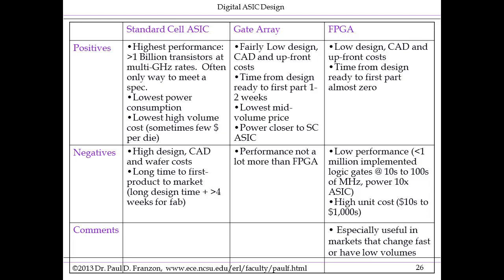The FPGA is almost the inverse opposite. Very low design costs — you can do this with small teams. The CAD tools are very cheap, often free, and you can go from having a design ready to your first part in zero time. However, performance is quite low: you tend to have only 100,000 or so logic gates operating at around 100 MHz, and power per unit function is at least 10 times that of an ASIC. These are also large, complex chips with a very high per-unit cost — some FPGAs sell for over $20,000 each.